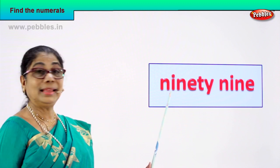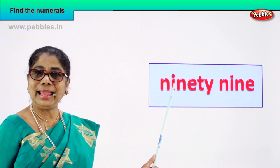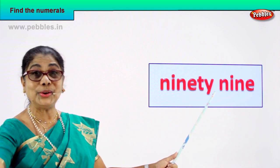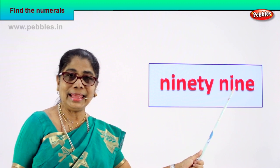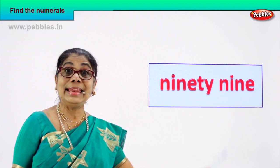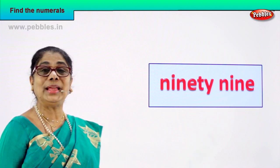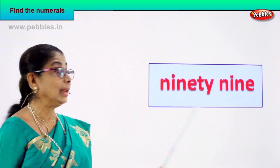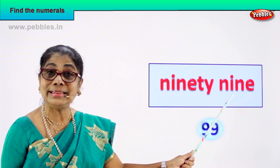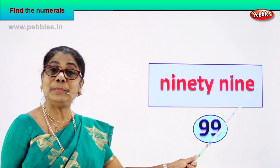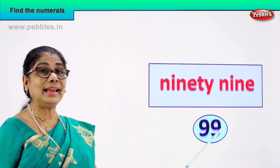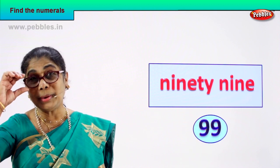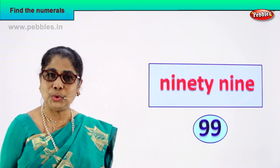Let's go to another number name. Read: N-I-N-E-T-Y is ninety, N-I-N-E is nine. Very good — 99. How do we write this numeral? 99 can be written as 9 and 9 — 99. Very good, you found the correct numeral. Excellent!